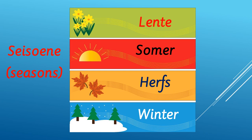The next one down should be very easy for you because it looks very similar to the English word. So that is somer — say somer. Okay, so somer is summer. The next one down is one you're going to have to learn because it is a little bit different. And there you see nice golden colored leaves, which is actually the season we're in now — if I look outside my window I see lots of leaves changing color. And that is herfs. Say for me: herfs.